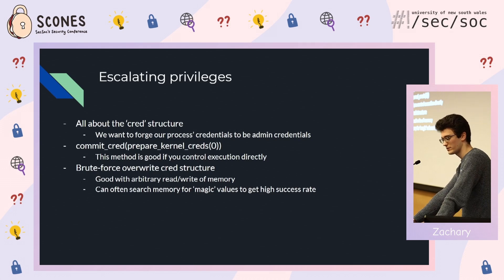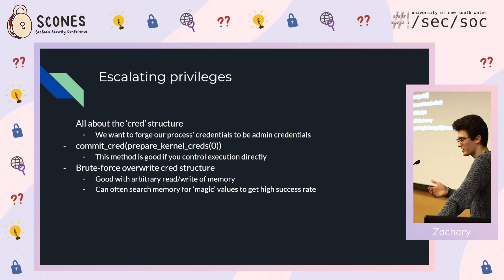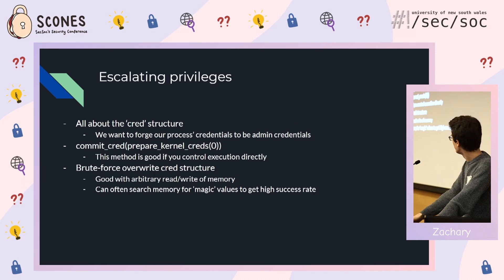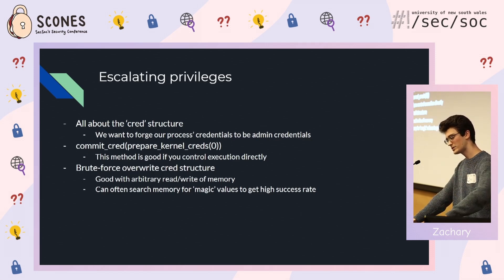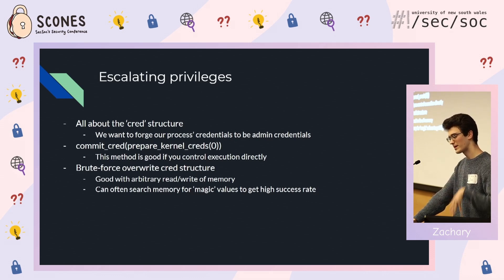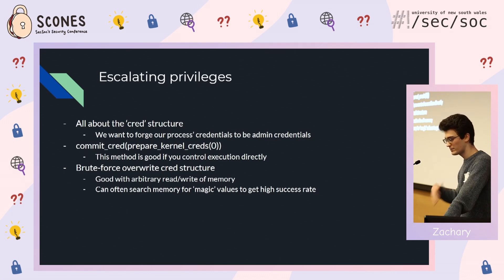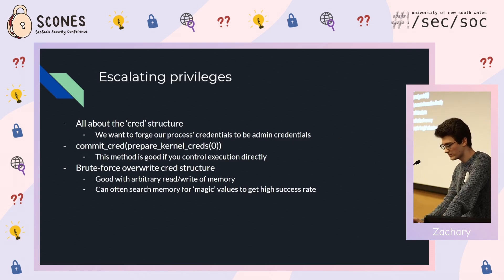There are two main ways to escalate privileges. First, the kernel provides functions to do it: `prepare_kernel_cred(0)` followed by `commit_creds()` — and suddenly your process has admin credentials. This works if you can directly control what the kernel executes. The second way: read through all of memory, search for magic values to find the credential structure, then overwrite it to look like admin credentials. This is useful when you can arbitrarily read or write memory but can't directly control execution.